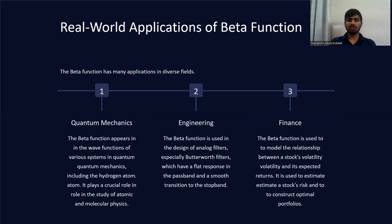The beta function has many applications in diverse fields. It is often used in probability and statistics for defining probability distributions and in Bayesian statistics. It is also used in areas like image processing, cryptography, and signal processing.